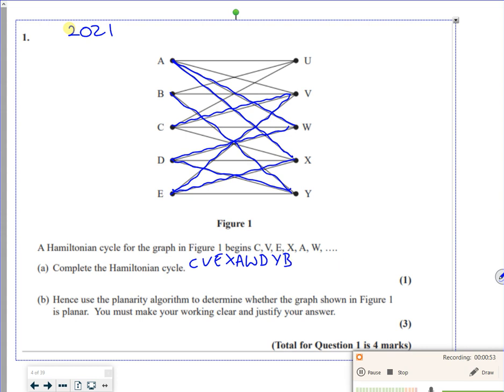Then from Y, I'm going to go to B. Remember, you're going to go to every vertex exactly once. From B to U, and then I've run out now, so I need to get back to C. So U to C. And that's my Hamiltonian cycle.